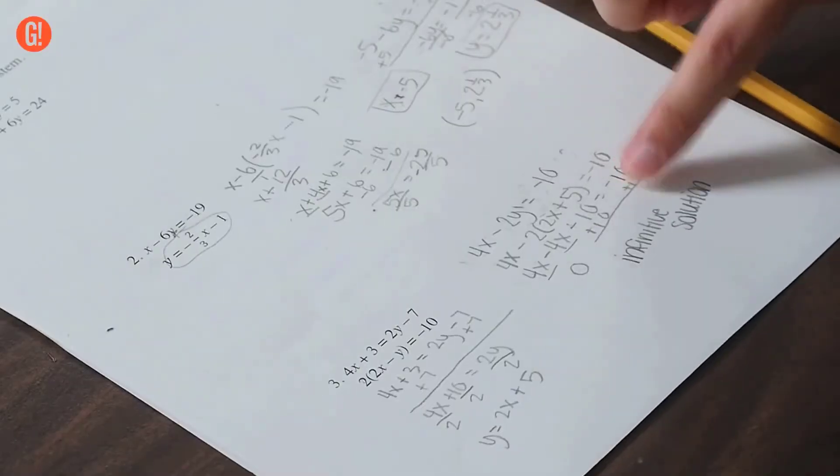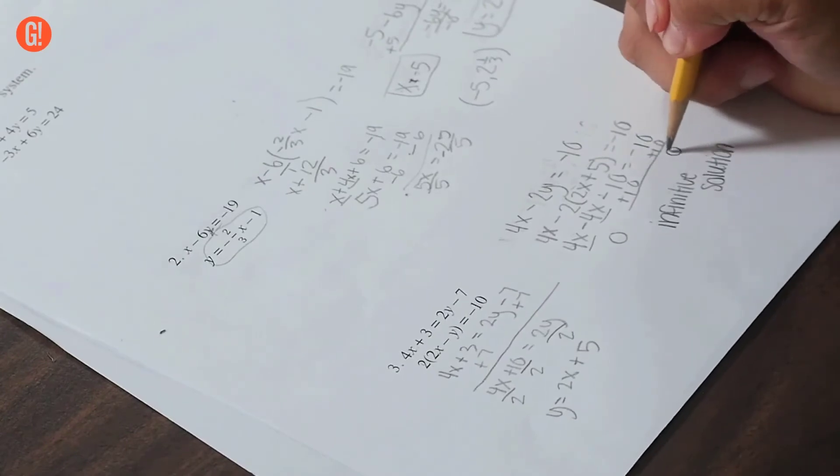What happens when you have the same number on each side of the equal sign? On a graph, it would be the same line. There's just one line, so you can't find another line that intersects it because both of them are the same line.